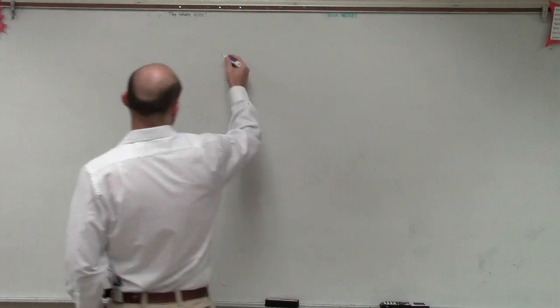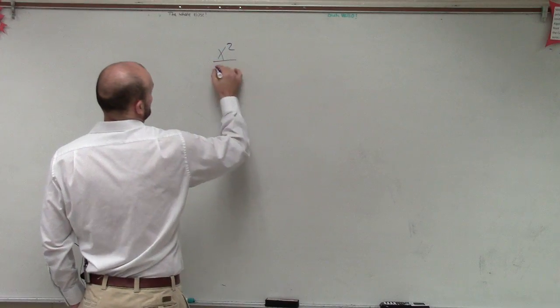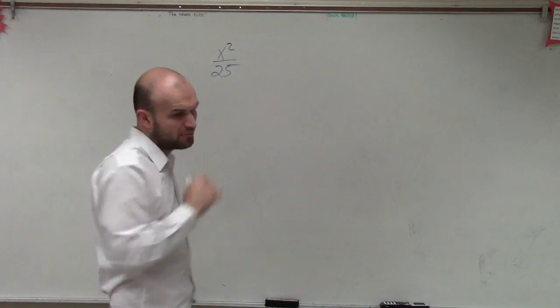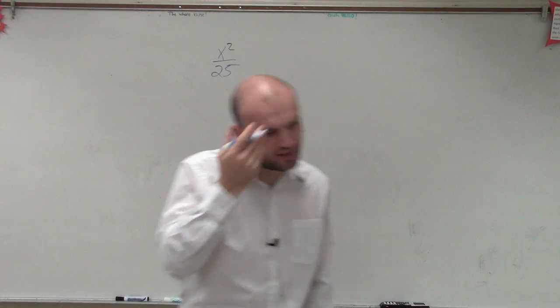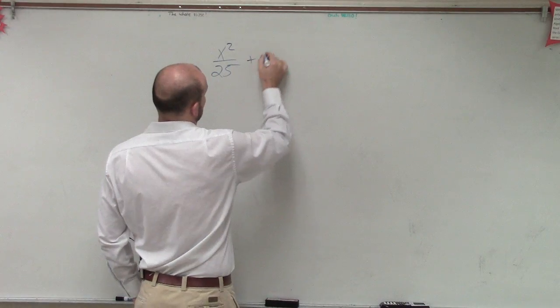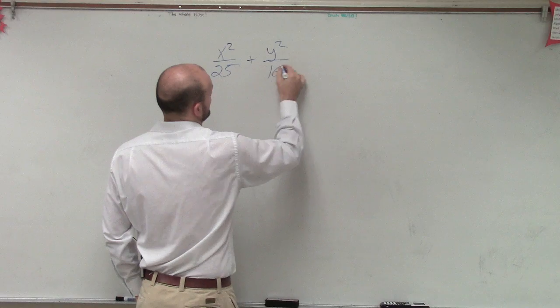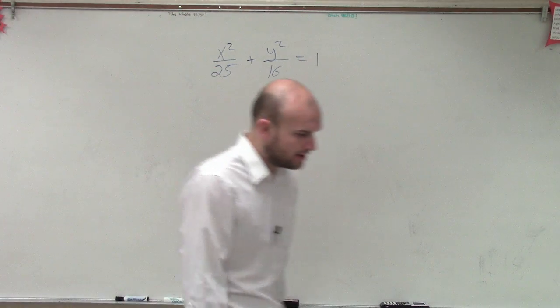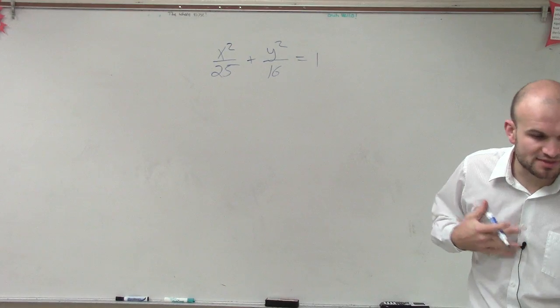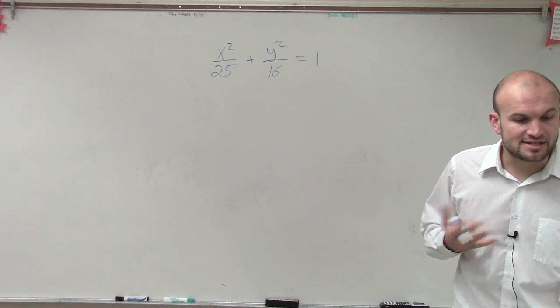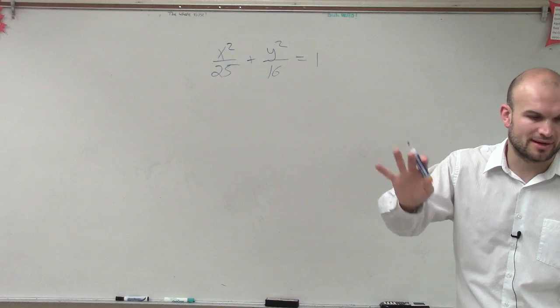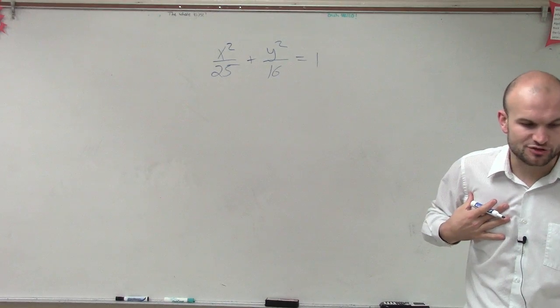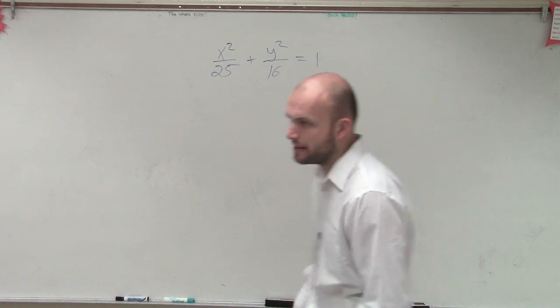Let's look at number 7 which says x squared divided by 25 plus y squared over 16 equals 1. So on this problem, all they're simply asking us to do is find the center, the vertices, the foci. We're not going to worry about eccentricity right now, and then we'll sketch the graph.